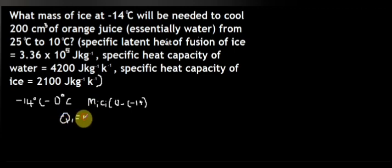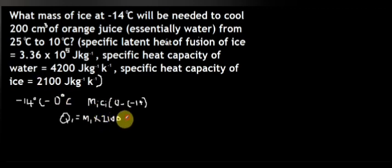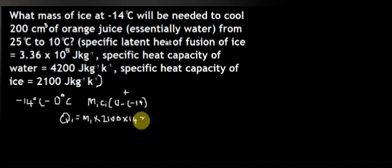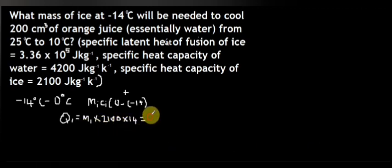So Q1 is equal to the mass of ice times the specific heat capacity of ice, which is 2100 joules per kilogram per kelvin, times 14 — since minus times minus is plus. When we work that out, Q1 equals 29,400 × mᵢ joules.